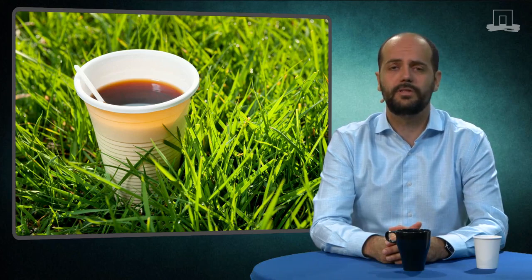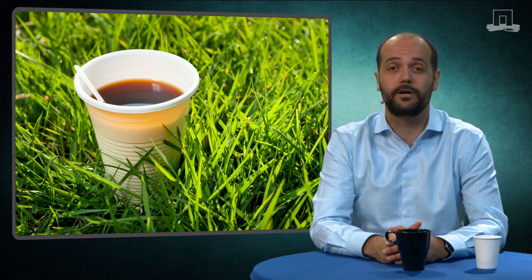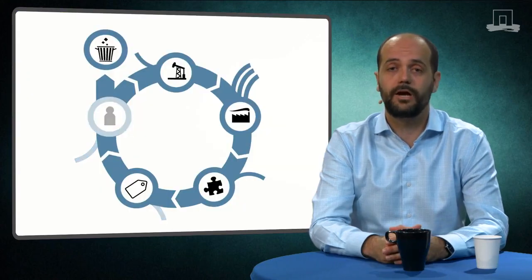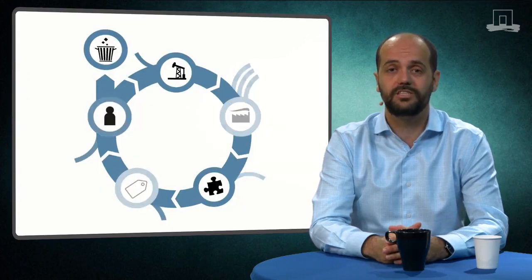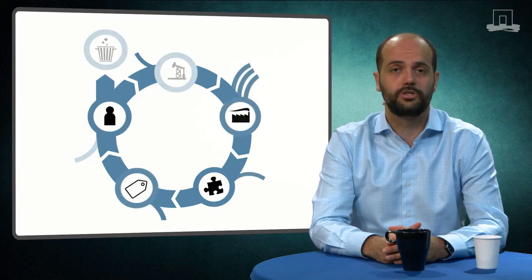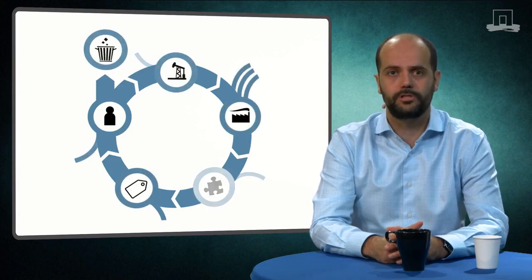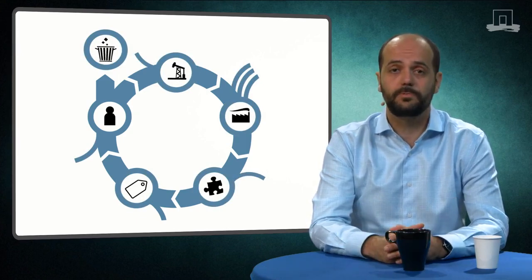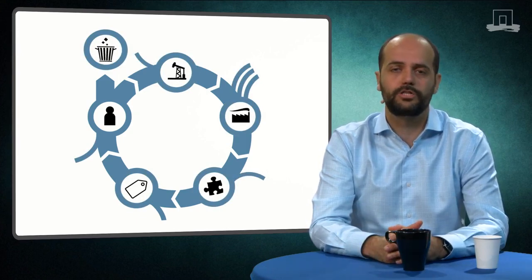The next thing we do is to understand our system boundary. Remember that LCA quantifies the environmental exchanges caused by a product or service being evaluated. Our system boundary is the extent to which we consider these exchanges. It is not possible to consider all the possible environmental exchanges by a product, but it is possible to identify what will be the largest exchanges.